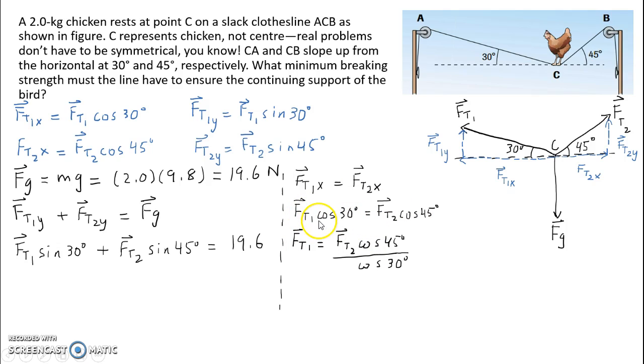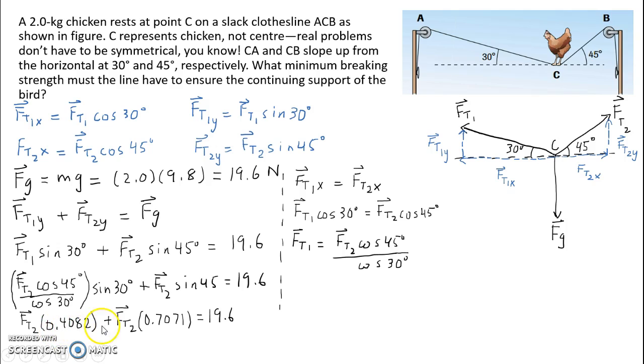Now what we do is we're going to isolate for FT1, and now we're going to have two equations and two unknowns. This is our first equation, and this is going to be our second equation. What we're going to do is substitute this into the first equation. We're going to solve this system of equations by substitution. We're going to replace FT1 with FT2 cos 45 divided by cos 30. Then simplifying this we get FT2 times 0.4082 plus FT2 times 0.7071 is equal to 19.6.